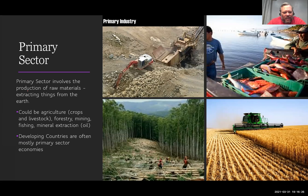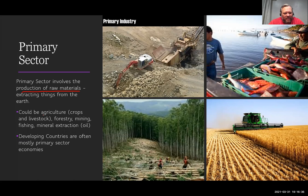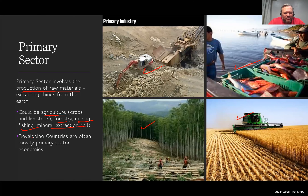The primary sector is the production of raw materials — getting stuff out of the ground, out of the sea, or wherever. This includes agriculture — crops and livestock — forestry, mining, fishing and fisheries, and mineral extraction such as oil. It's all about pulling out natural resources and raw materials.